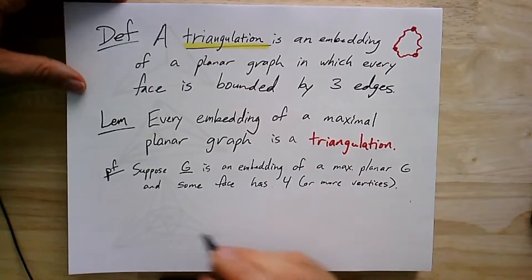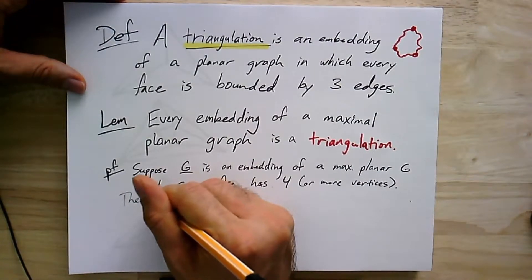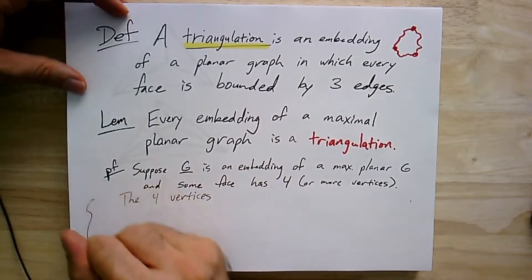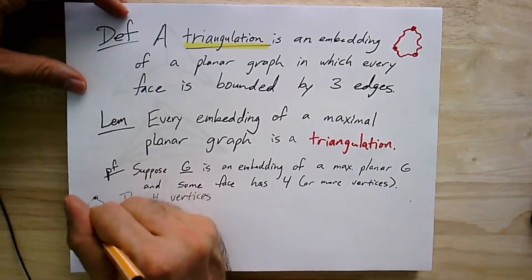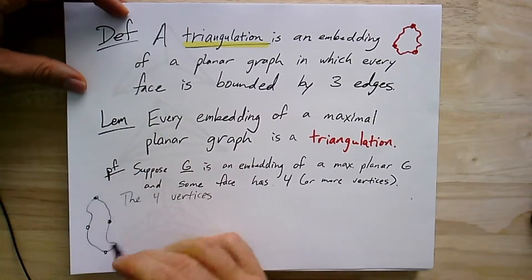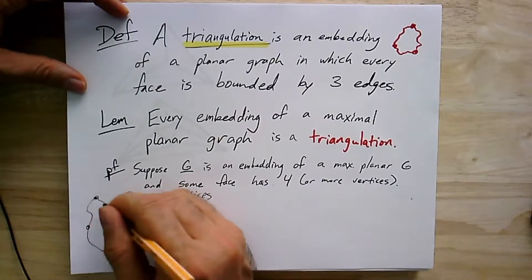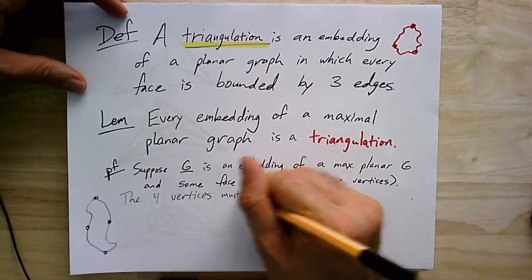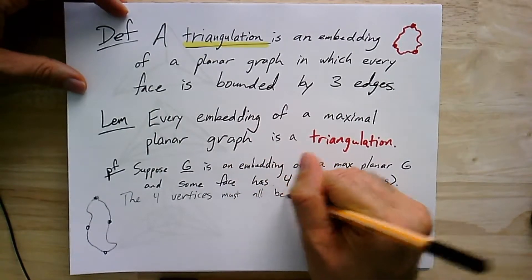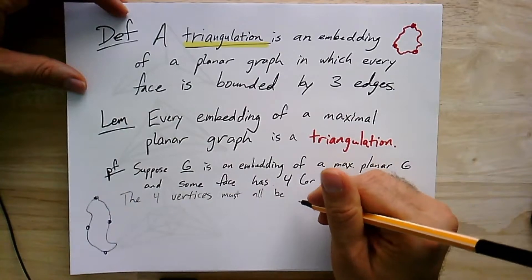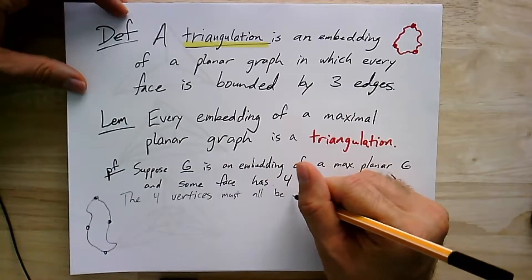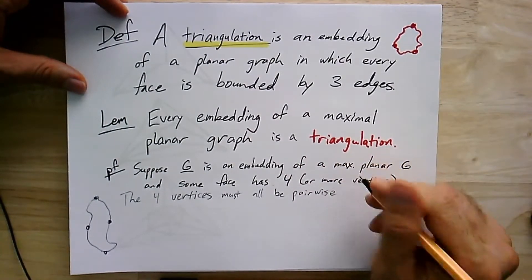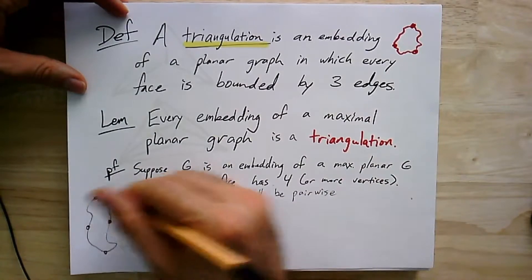What do we know then? In that case, the four vertices on that face, let's draw a picture of it. So there's some cycle here, it's got four vertices on it. It might not even be a cycle, but they're somehow all on the same face. These four vertices must all be pairwise connected. So for any pair of these vertices, there has to be an edge there already. And the reason that's true is that if there wasn't one, I could add it, because since they're connected across the face.